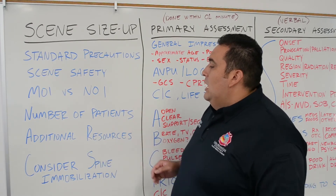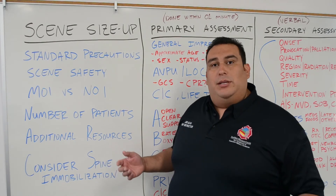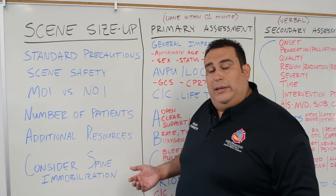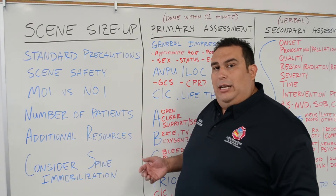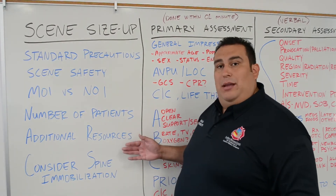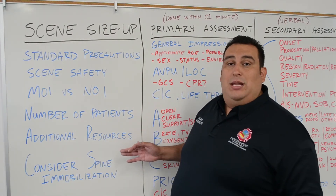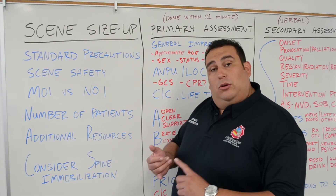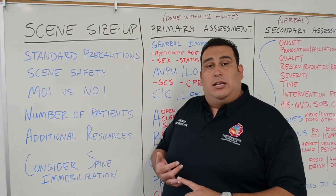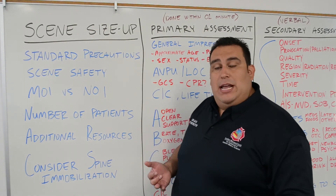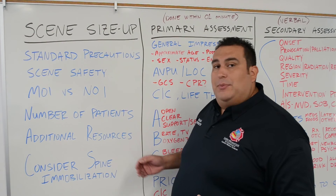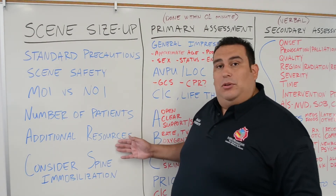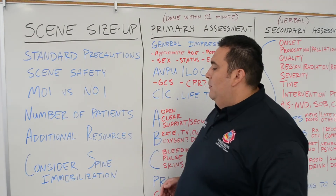Additional resources — commonly we're going to be talking about either the fire department or the police department. But don't forget, additional resources could be more ambulances because we have multiple people, a tow truck, CHP because we're on the freeway, or many different types of resources. When in doubt, call dispatch, let them know what you have, and they can help you figure it out.